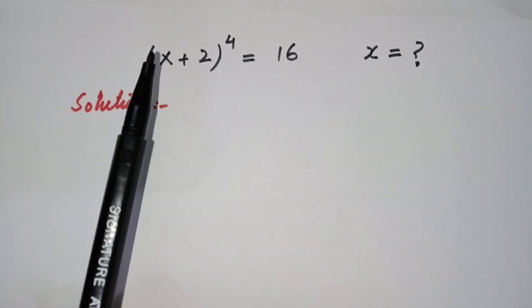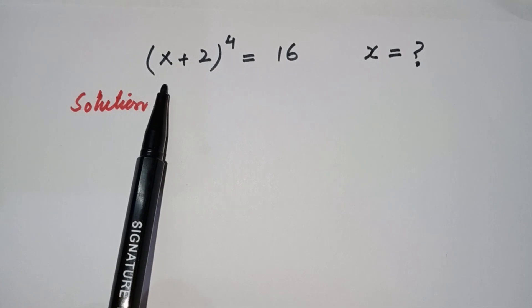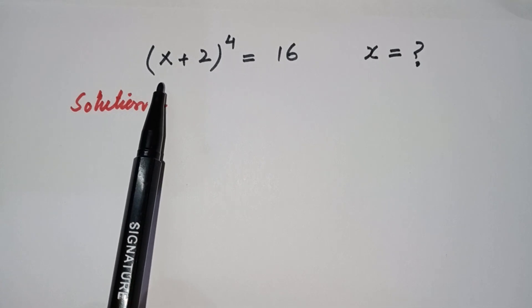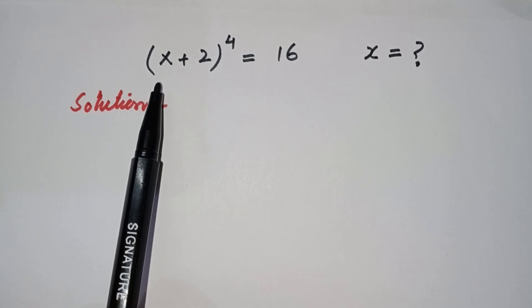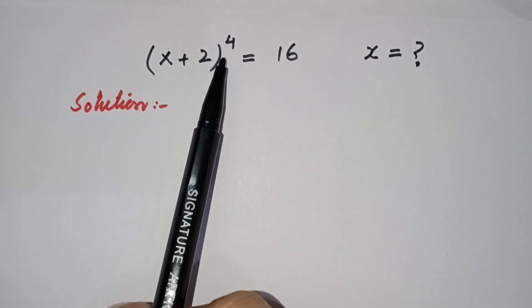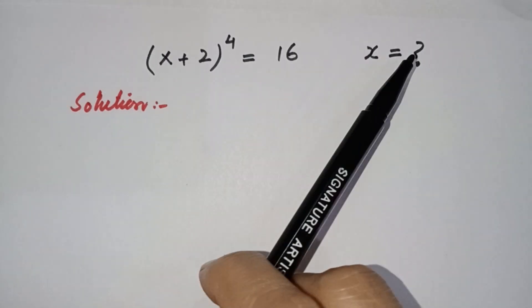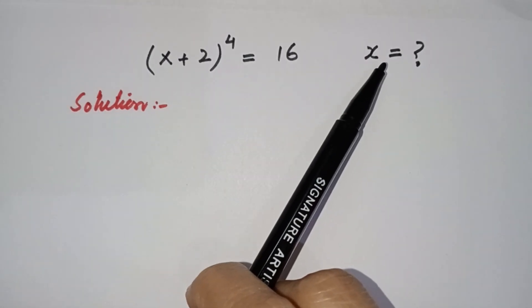Hello everyone, welcome back to Brain Equations. Today we are going to solve the question: (x + 2) to the power 4 is equal to 16. We have to calculate the value of x, so let's begin.